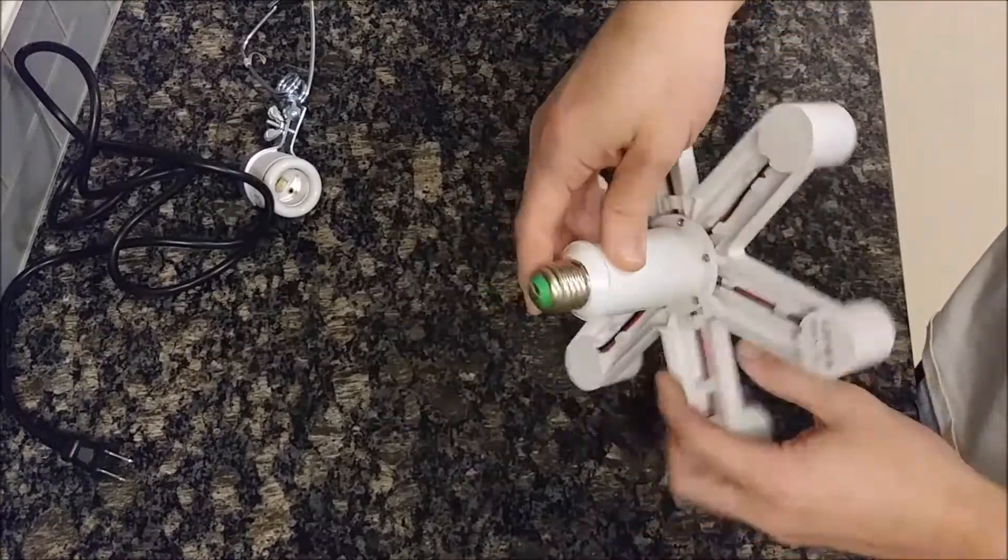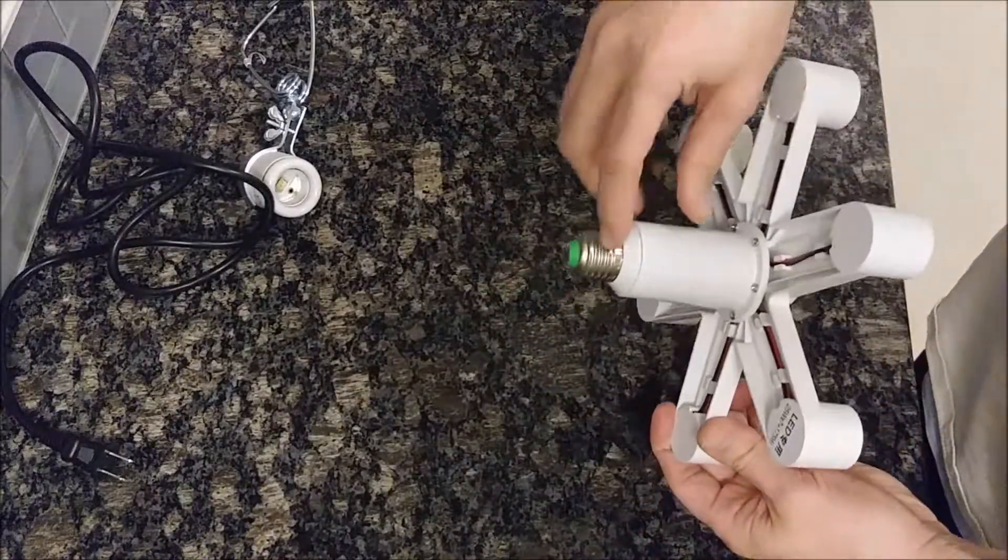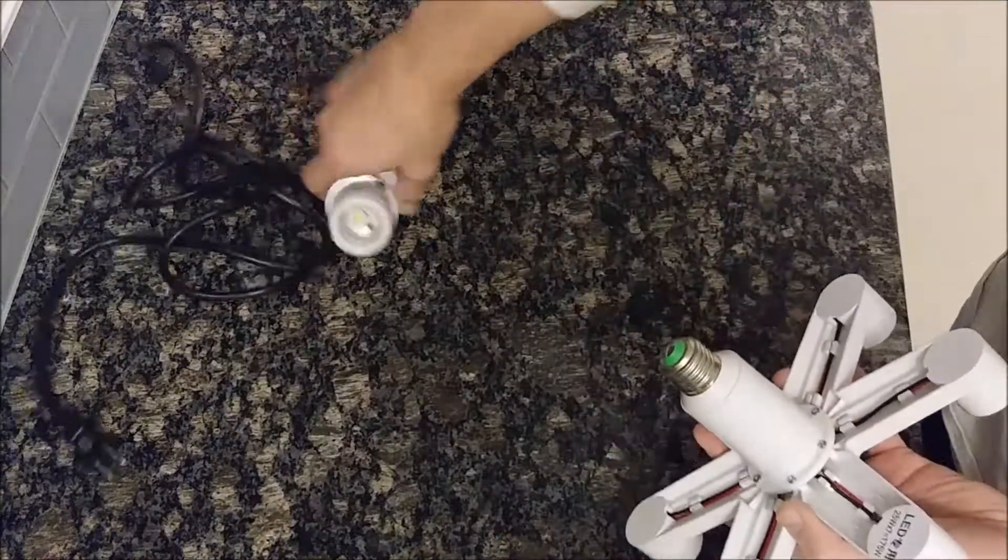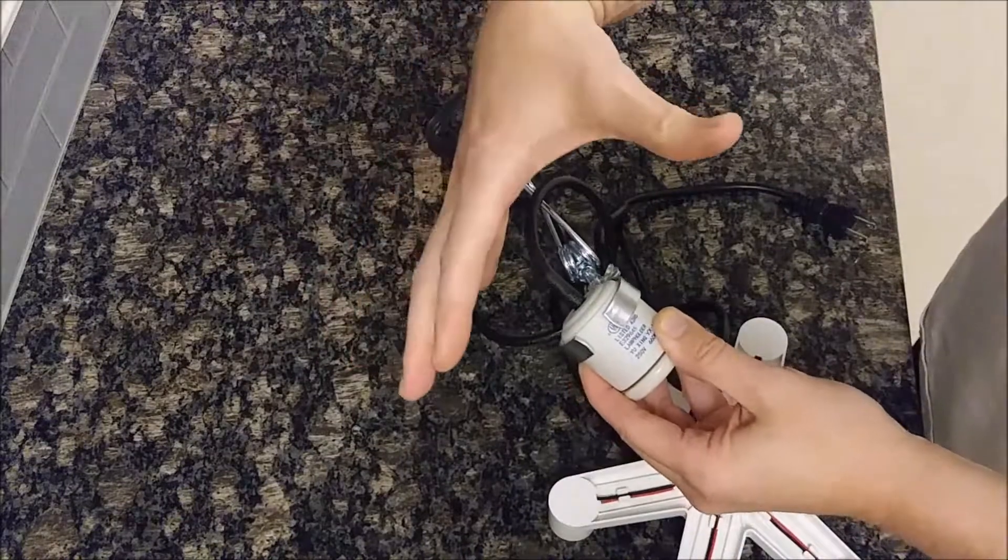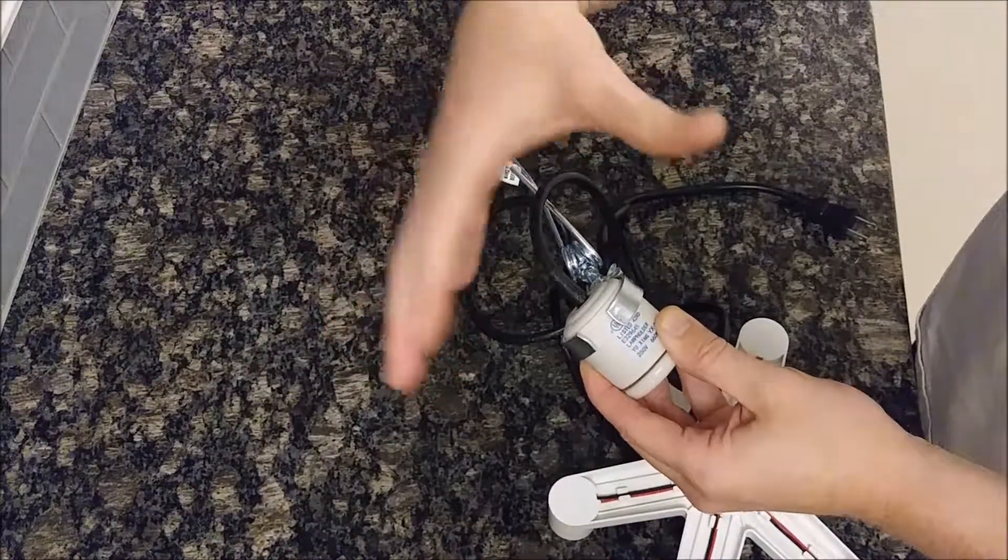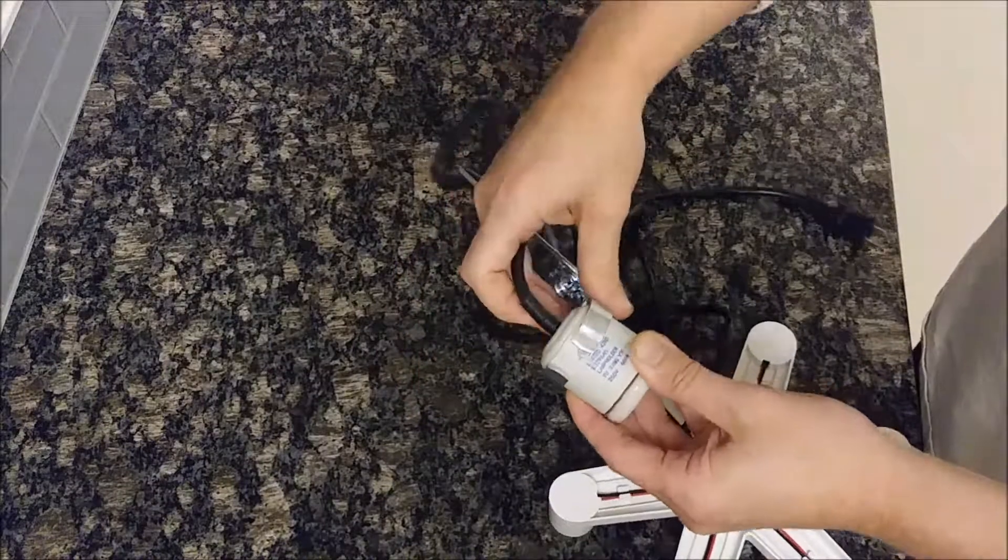It already has a socket, a bulb socket right there if you can see the threads, and that'll screw into any kind of socket you have. Here I've got a heat lamp that I took the reflector off of, the metal dish that's typically on a heat lamp.